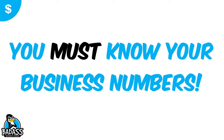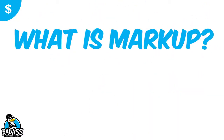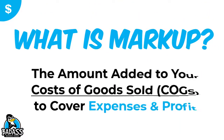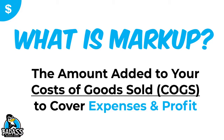You've got to know your numbers because this is going to help you price better so you capture everything you need. Make sure you dive in and understand your profit and loss statement — it has the numbers you need to price correctly. To recap: markup is taking your cost of goods and adding the amount needed to cover your expenses and your profits. Understand those percentages as they relate to markup and that's going to help you price better.